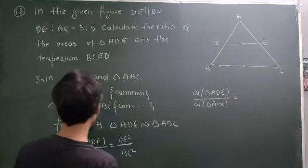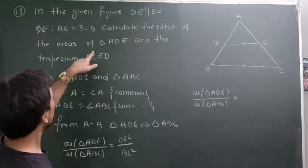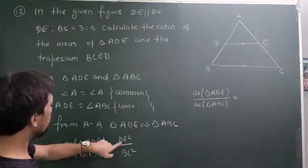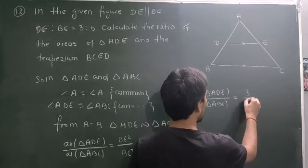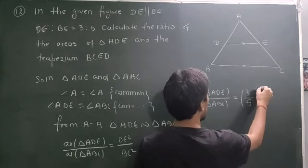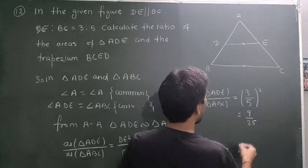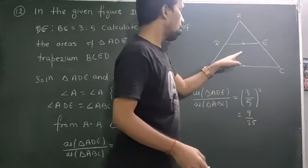Given in the question, BE:BC is 3:5. So the ratio is 3 to 5.